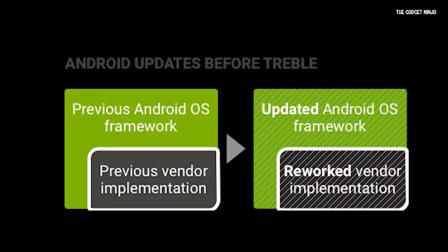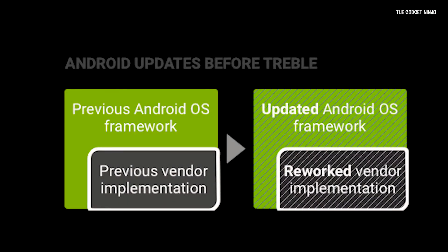Earlier it used to work something like this: the whole Android code was made up of two parts — the OS framework and the low-level hardware implementation, or vendor implementation. Now these both were dependent on each other, like they were stuck together. So if you had to update the whole code, you had to update both parts, and that's a lot of work.